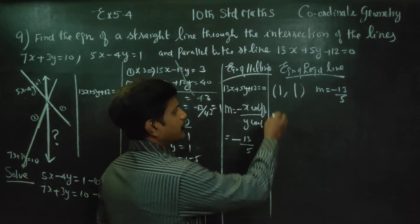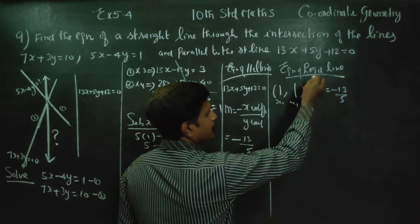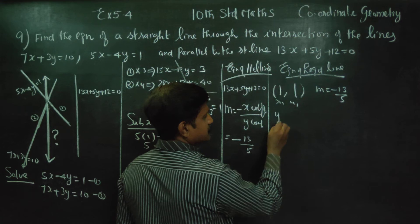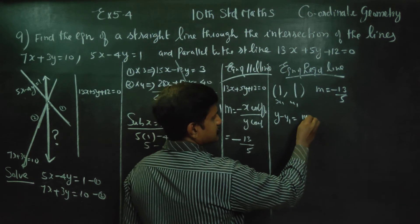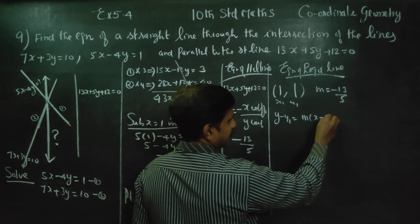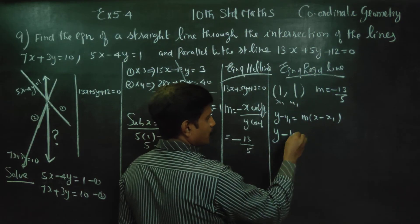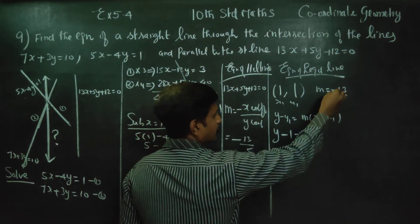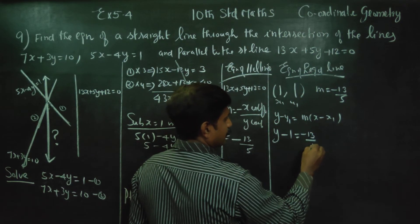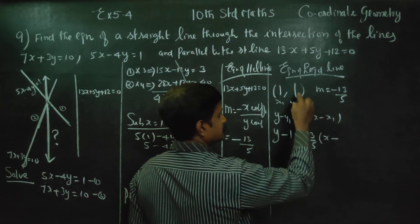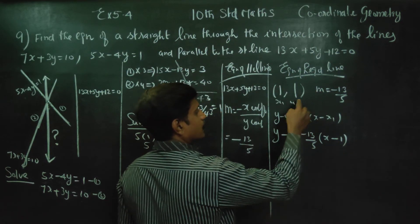This is my point of intersection (x1, y1) and this is my slope. The equation of the required straight line: y minus y1 is equal to m into x minus x1. So y minus 1 is equal to minus 13 by 5 into x minus 1.